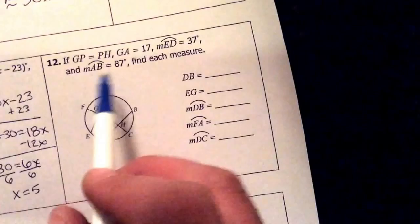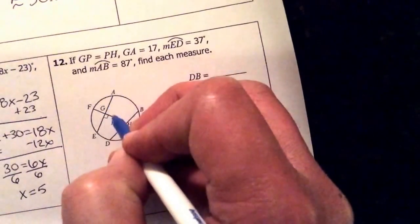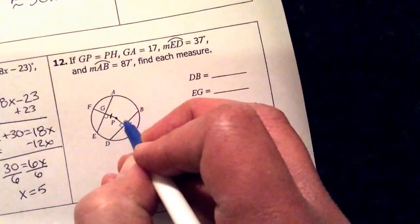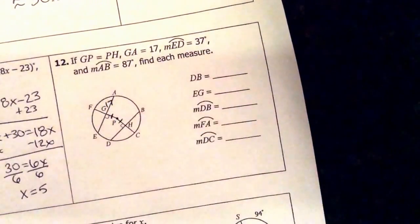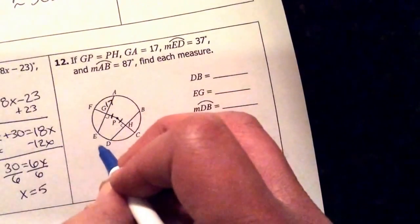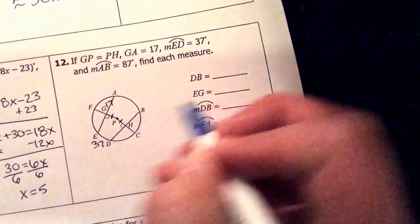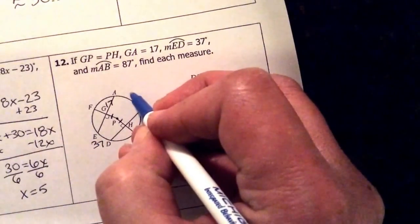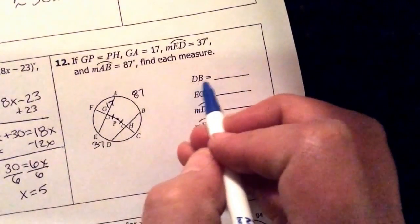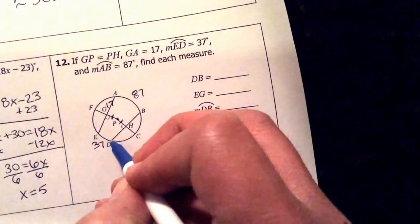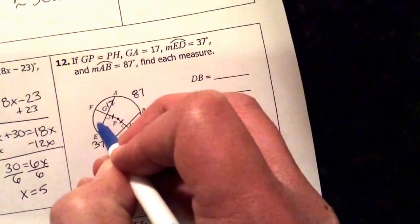Next question. They're telling us GP is congruent to PH. They're telling us GA is 17. They're telling us arc ED is 37. They're telling us arc AB is 87. So what they want us to find is segment DB which is the entire chord right here. If I know this is 17,